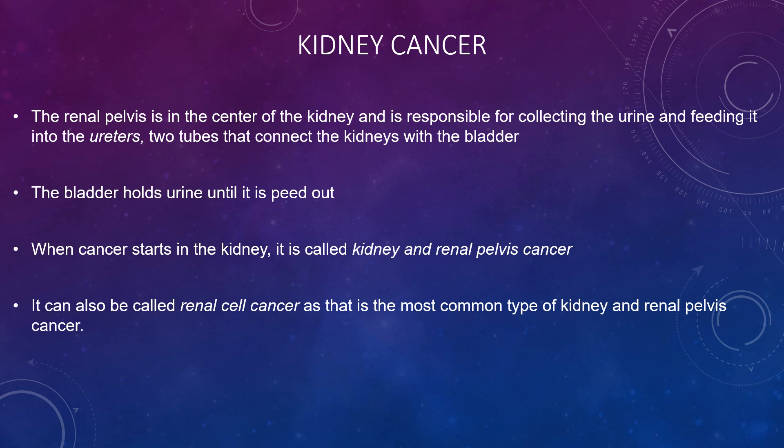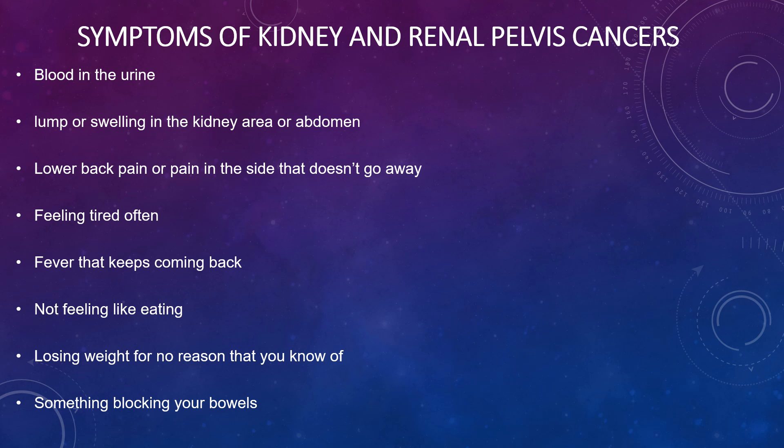Moving on to kidney cancer: the renal pelvis is the centre of the kidney and is responsible for collecting urine and feeding it into the ureters — two tubes that connect the kidney with the bladder, which holds the urine until it is excreted. When cancer starts in the kidney, it is called kidney and renal pelvis cancer, also known as renal cell cancer, which is the most common type.